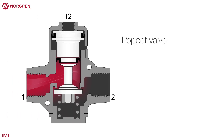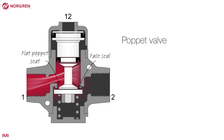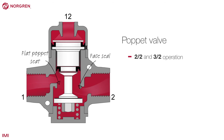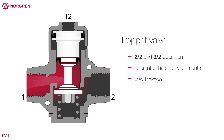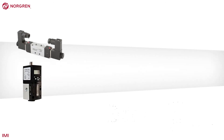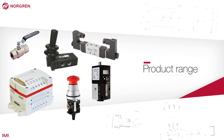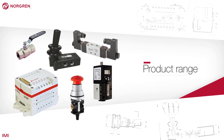A poppet valve is less common than a spool valve and operates in a different way, with a face seal acting against a flat poppet seat. These valves come in 2-2 and 3-2 operation, but are very tolerant of harsh environments, have a low leakage rate and can have a long life due to a lack of sliding friction. Now we have learnt about the theory, let's take a look at some of the control valves in the product range.